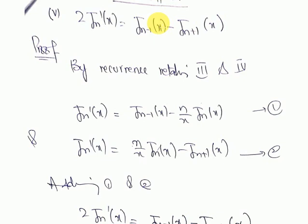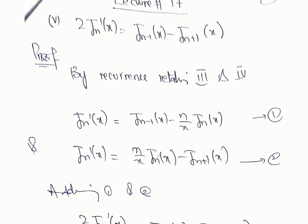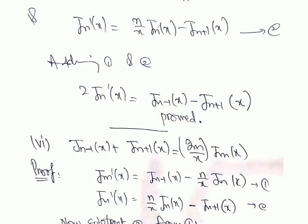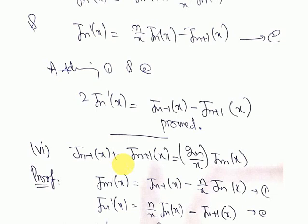The sixth recurrence relation is similarly very easy. It states: J(n-1)(x) + J(n+1)(x) = (2n/x)·Jn(x). Comparing with the fifth recurrence relation, here we have a plus between the J terms instead of a minus, and the right-hand side involves Jn rather than J'n.